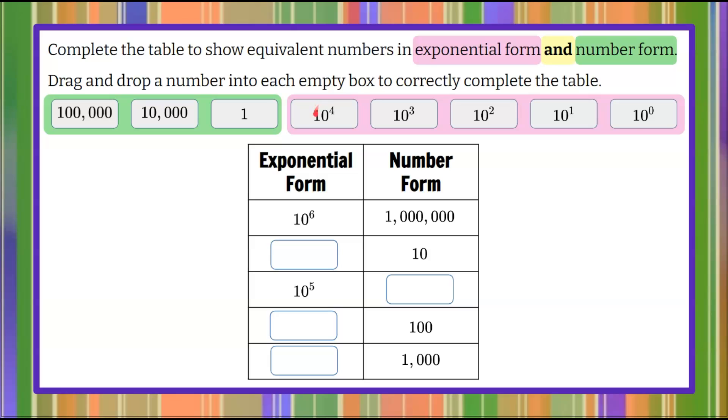Remembering that this is a power with a base of 10 and an exponent of 4. So when we look at our exponential form and our number form, we can see that we have our exponent to our base of 10, which tells us to multiply 10 by itself six times.